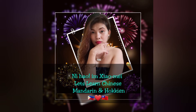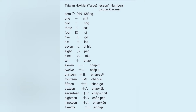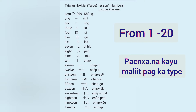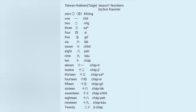Hello guys. Let's learn numbers in Hokkien or Taigi, okay? Kung, chit, nang, sa, si, go, lak, chit, pwe, kau, chap.